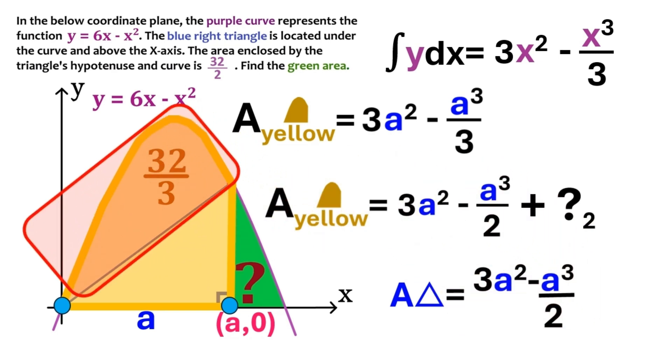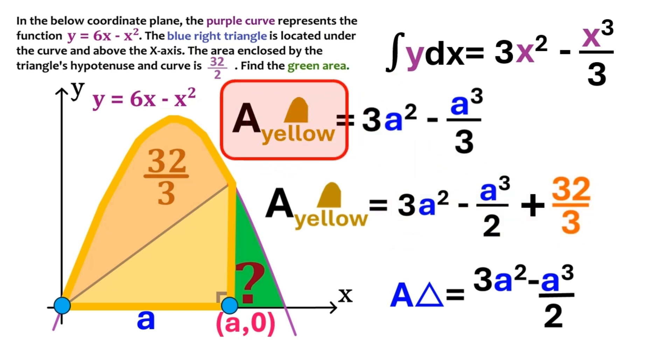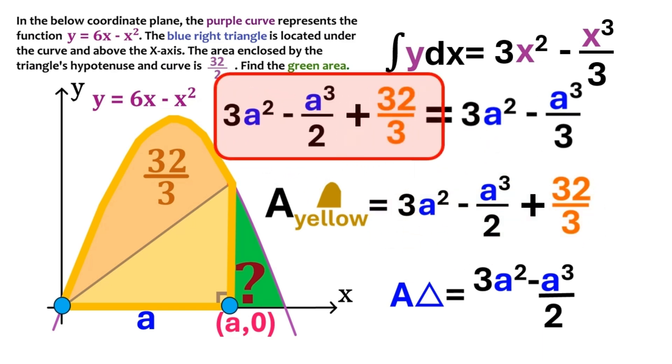And the second component is this weird shape that has an area of 32 over 3. So we can put 32 over 3 here. We have created another equation. And it tells us the yellow area equals this expression. So we can go ahead and replace this yellow area over here with that expression.